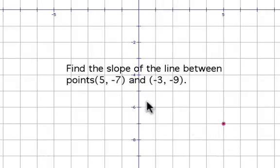There it is. Then (-3, -9), plot that point. Now we can draw a line between the two points. The slope between these two points is we go up 2 and over 8.